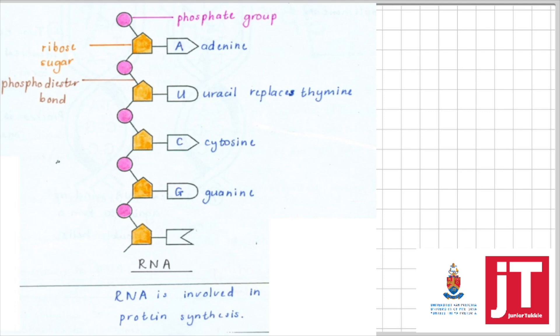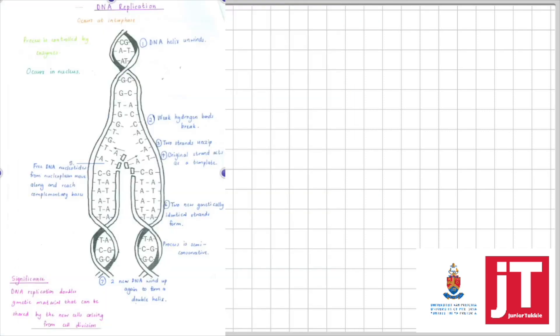Next, let's look at RNA. In pink, the phosphate group. The sugar is five-sided — you don't just say sugar, it's the ribose sugar. This is an RNA, so you label it according to the sugar: RNA has ribose sugar; DNA has deoxyribose sugar. The bond between the sugar and the phosphate group is a phosphodiester bond. RNA is single-stranded and will not have thymine — uracil replaces thymine. The function of RNA is that it is involved in protein synthesis.